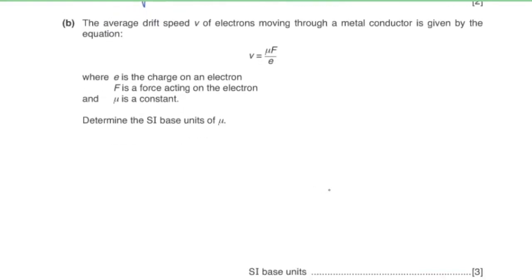Part b: the average drift speed of electrons moving through a metal conductor is given by an equation where q is the charge on an electron, F is the force acting on the electron, and μ is a constant. To determine the SI base units of μ: constant μ equals average drift speed multiplied by the charge on the electron, divided by the force acting on the electron.